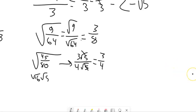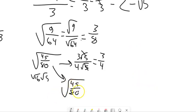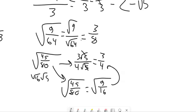Or you can reduce the fraction first: 45 and 80 are both divisible by 5. 45 over 80 reduces to 9 sixteenths. Then the square root of 9 sixteenths is 3 fourths. Both ways give the same answer.